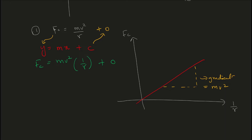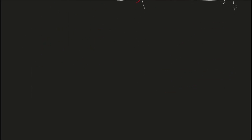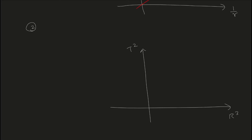That's a simple example where an equation that doesn't look like a straight-line equation gives a straight line if you plot the right quantities on each axis. This skill is also important for paper 5, but right now we are focusing on paper 4 equations. Let's take a look at another example: a graph of T² on the y-axis and r³ on the x-axis, again a straight line passing through (0, 0), where T is the period of a satellite and r is the radius of the orbit.